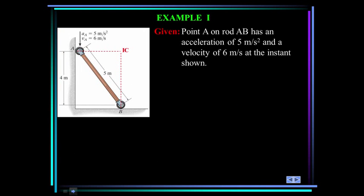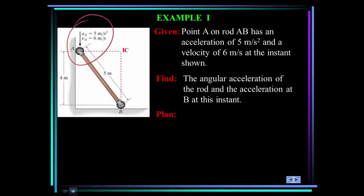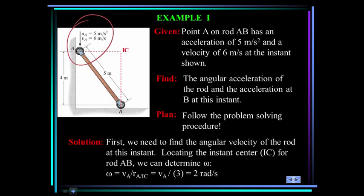Let's look at an example. Point A on rod AB has an acceleration of 5 meters per second squared and a velocity of 6 meters per second at the instant shown. Find the angular acceleration of the rod and the acceleration of B at this instant. Our plan is to follow the problem-solving procedure. First we need to find the angular velocity of the rod at this instant by going back to the relative velocity equation — locating the instantaneous center of rod AB. Omega is the velocity of A divided by the link R from A with respect to IC. So omega is 2 radians per second.